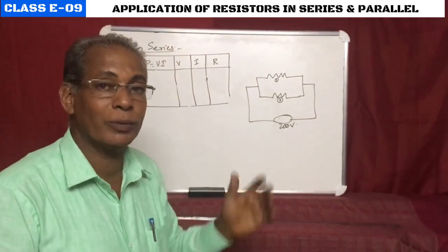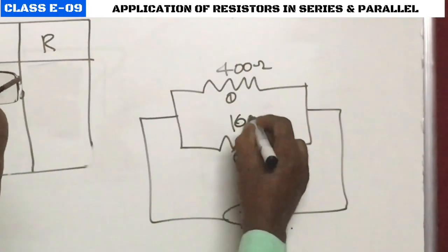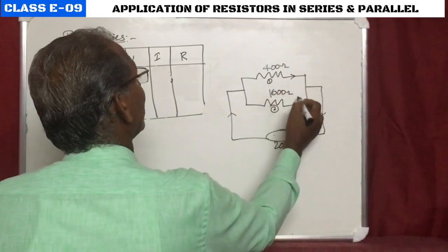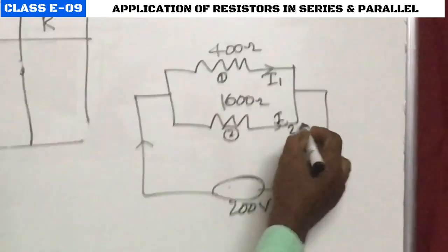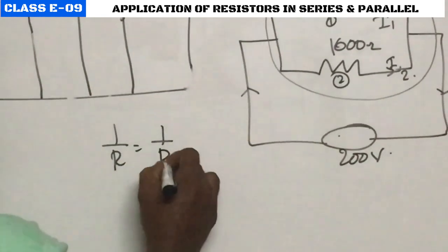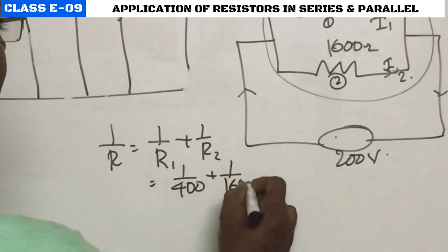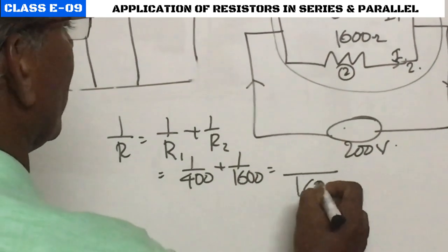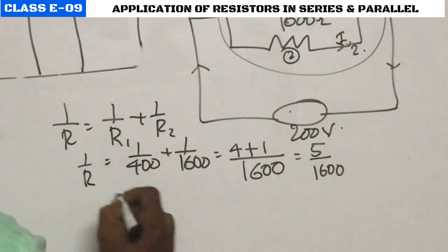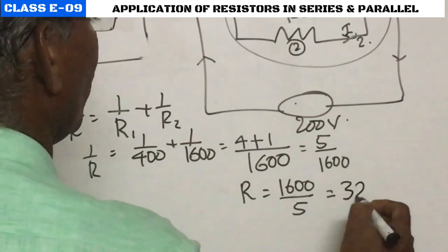Now analyzing the parallel circuit: bulb 1 is 400 ohm and bulb 2 is 1600 ohm. There will be branch currents I1 and I2. Effective resistance: 1/R = 1/R1 + 1/R2 = 1/400 + 1/1600 = 4/1600 + 1/1600 = 5/1600. Therefore R = 1600/5 = 320 ohm.